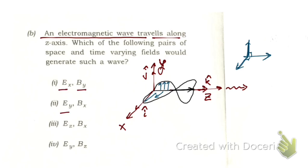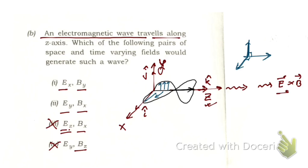The options include Ex-By, Ey-Bx, Ez-Bx, and Bz combinations. Ez and Bz cannot be possible because the wave propagates along z, so E and B must vary along x and y. The direction of propagation is given by E cross B. Since E cross B must point along z (k-cap), and i cross j equals k-cap, E must be along x and B along y.